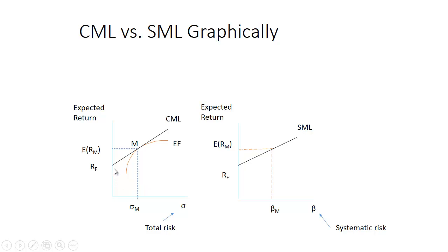There's a linear relationship between two assets. The risk-free asset sits on the y-axis — the y-intercept — because there's no risk, so standard deviation is zero. If you draw a line from there to any portfolio, you get a straight line called a capital allocation line. The best you can do is to be tangent to the efficient frontier, which gives us the steepest capital market line. Portfolios above that don't exist, so this is the best you can do.